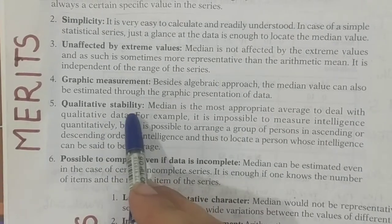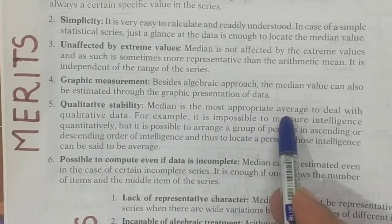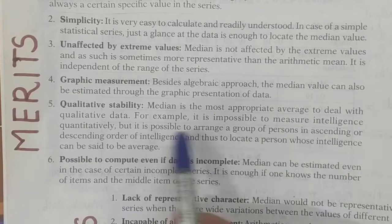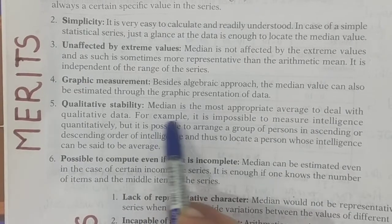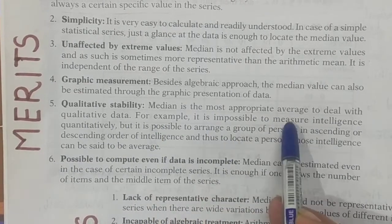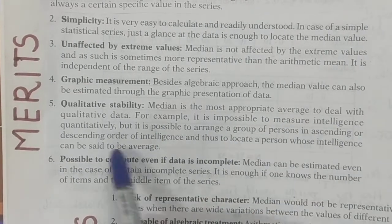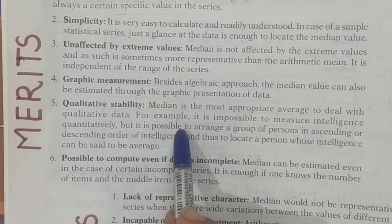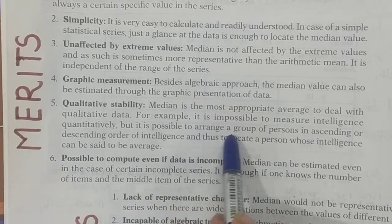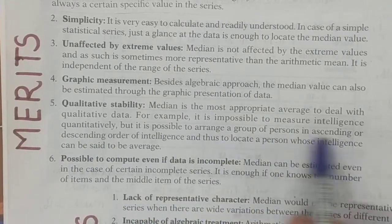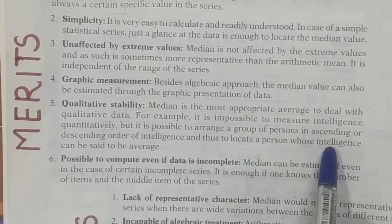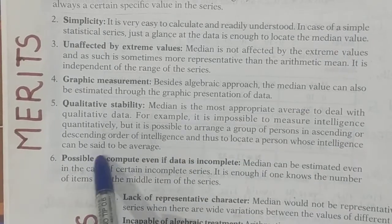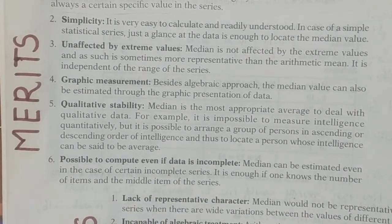Number five: qualitative stability. Median is the most appropriate average to deal with qualitative data. For example, it is impossible to measure intelligence quantitatively, but it is possible to arrange a group of persons in ascending or descending order of intelligence. Thus, you can locate a person whose intelligence can be said to be average — that is, who is in the middle.